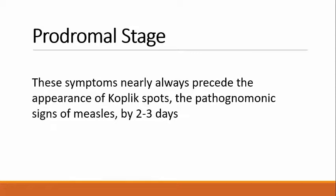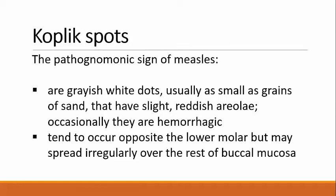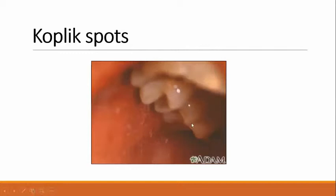Koplik spots are grayish-white dots, usually as small as grains of sand, that have slight reddish areolae, and occasionally they are hemorrhagic. They tend to occur opposite the lower molars but may spread irregularly over the rest of the buccal mucosa. Here is a picture of Koplik spots — grayish spots visible in the buccal mucosa.